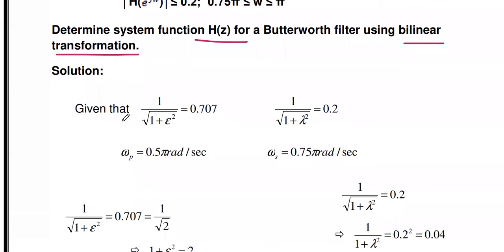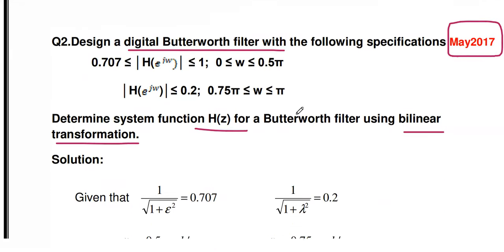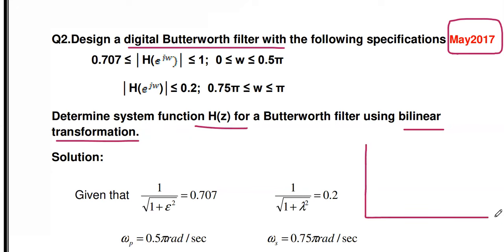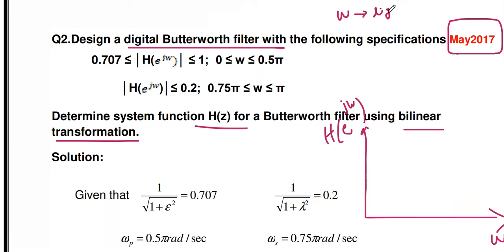First, let's write the given data. You know the frequency response for a low-pass filter — digital frequency ω versus |H(e^jω)|. There are two frequency notations: the lowercase ω (omega) is the digital frequency, while the uppercase Ω (ohm/omega) is used for analog frequency. Here the digital frequency values are given — this is the low-pass filter frequency response.